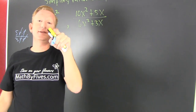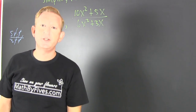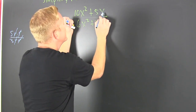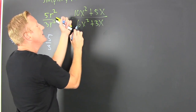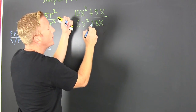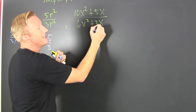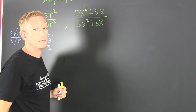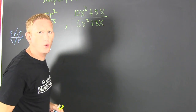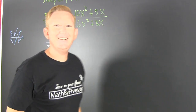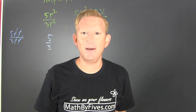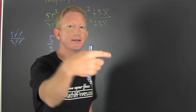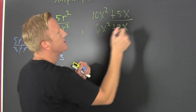Alright, what about this one? I have 10x squared plus 5x divided by 10x squared plus 3x. Can I just cancel those x's? No! Why couldn't I do it like in the last example? Because it was written as a product. We need to write this as a product.